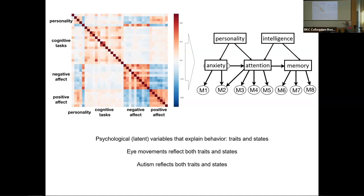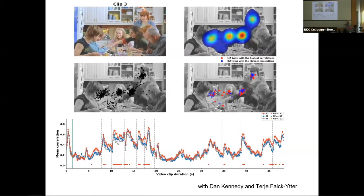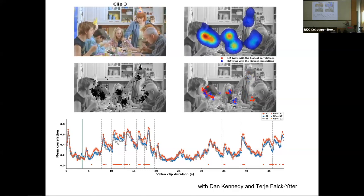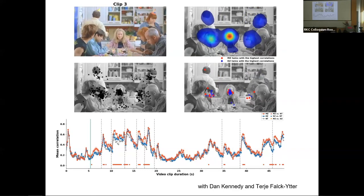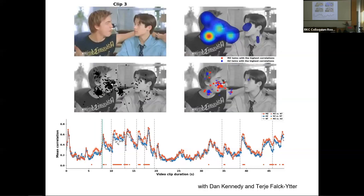And eye movements reflect both of these, and autism reflects both of these. Here's one example from data that we collected recently, unpublished as of yet, that makes the point that indeed eye movements, eye tracking, is heritable. So these are over a hundred or so pairs of children, teenagers, who watched this video.